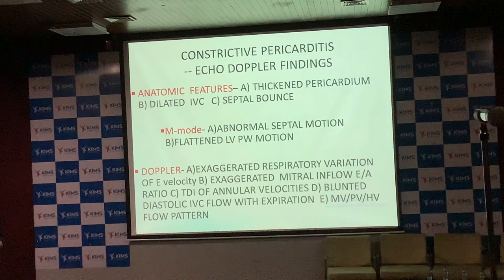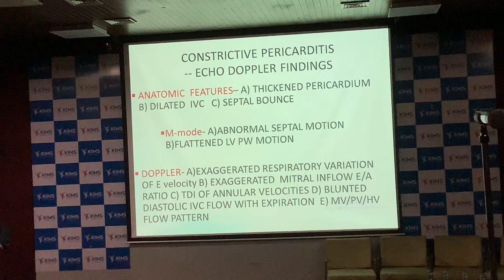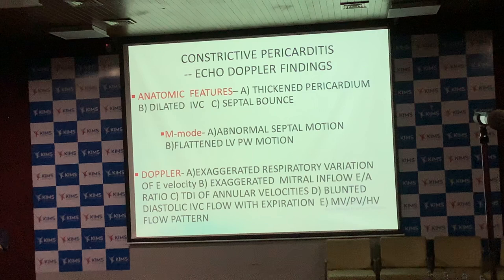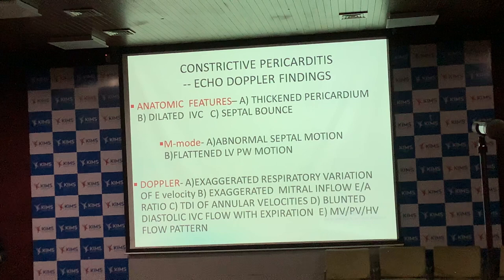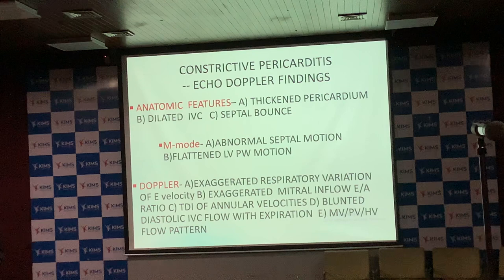Important echocardiographic findings include: thickened pericardium more than 3 mm, dilated inferior vena cava, and septal bounce. Septal bounce is very easy to appreciate and is an important characteristic of constrictive pericarditis — though abnormal septal motion may also be seen in left bundle branch block or coronary artery disease.